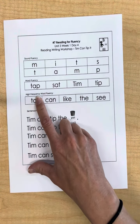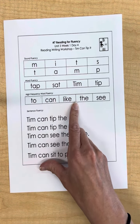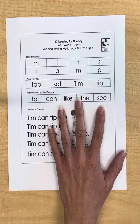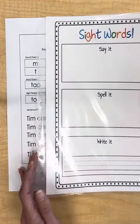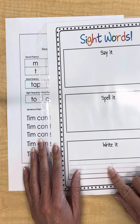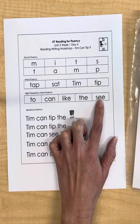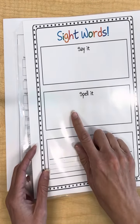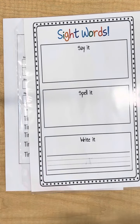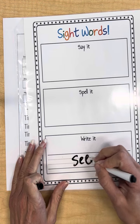Read the high frequency words: to, can, like, the. If they get to one they don't know, remember to have them say it, spell it, and write it. They'll say the word. You'll say the word is 'see.' Have them spell it — they'll say S-E-E. Then have them write it — they will write S-E-E.